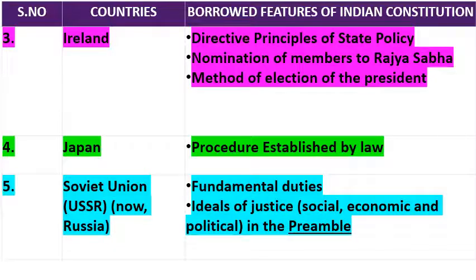Ireland के constitution से क्या borrow किया गया है? Directive Principles of State Policy — जैसे मैंने अपने previous video में mention किया था। Next है Nomination of Members to Rajya Sabha — Rajya Sabha में जो members का nomination होता है, उसका procedure भी Ireland के constitution से borrow किया गया है। Next है Method of Election of President — जो President का election होता है, वो method Ireland के constitution से लिया गया है, जिसे Article 55, Clause 3 में बताया गया है।